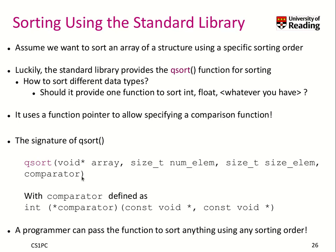The comparator is a function pointer defined as follows. It takes two inputs — void star, void star — meaning two elements of our array that we want to compare. The comparator returns a negative value if the first one is smaller than the second one, returns a value larger than zero if the second one is bigger than the first one, and returns zero if both are identical.